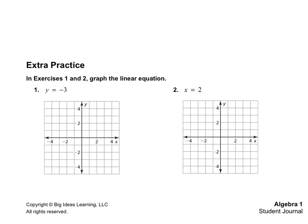On page 77, in exercises 1 and 2, they want us to graph the linear equation. I would like for you to go ahead and graph numbers 1 and 2 based upon what I just taught you about horizontal and vertical lines. Pause the video and then turn it back on when you're done. For number 1, I had a horizontal line crossing at negative 3, and for number 2, it should be a vertical line crossing on the X-axis at 2.